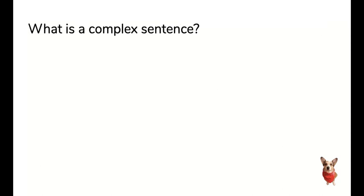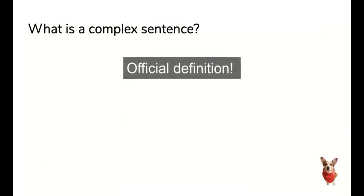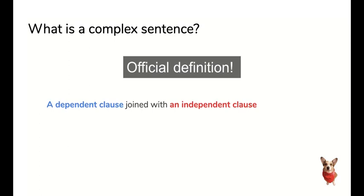So what is a complex sentence? Basically you're looking at a dependent clause joined with an independent clause. So for this lesson the dependent clauses will be in blue and the independent clauses will be in red. We know from our last lesson that an independent clause is just like a simple sentence. Basically it's independent. It can stand by itself.